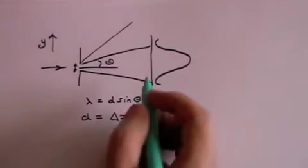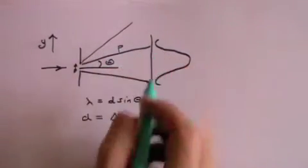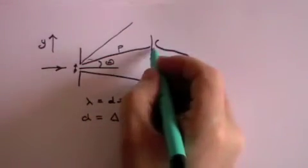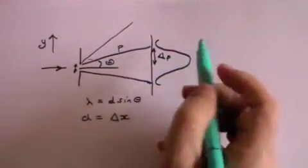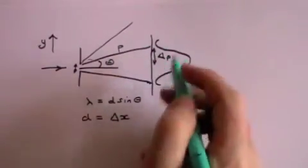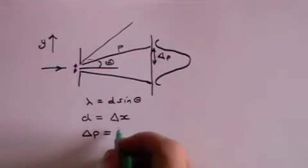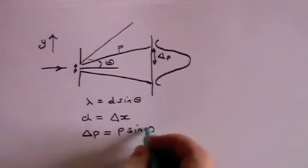What about the momentum? Well, the momentum of the wave which is coming along here has a component part here, delta p. It is the uncertainty in the momentum in the y direction. And delta p is simply p sine theta.